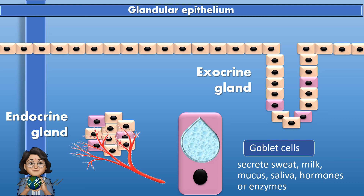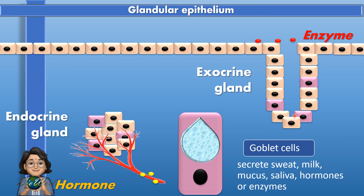Let's take the example of an endocrine gland — say this is a pituitary gland located in our brain. The goblet cells will synthesize hormones such as growth hormone, which will then be transported by blood to the rest of the body for growth to occur. In the case of an exocrine gland, let's say this is a salivary gland. The goblet cells will not only synthesize and secrete saliva, but also synthesize enzymes such as amylase. The amylase is then transported through the salivary duct to the surface of our mouth, where the enzyme breaks down starch into maltose.